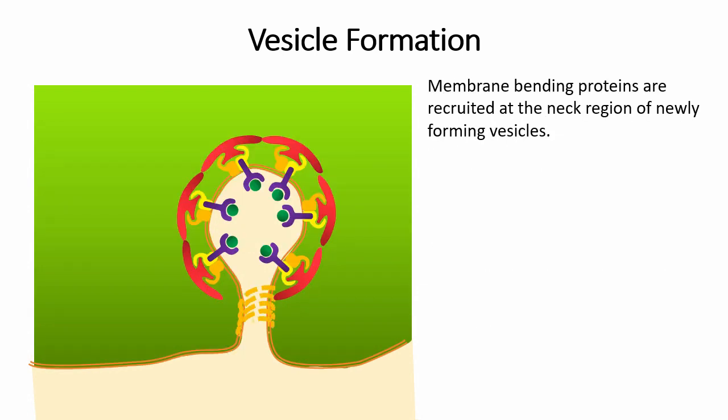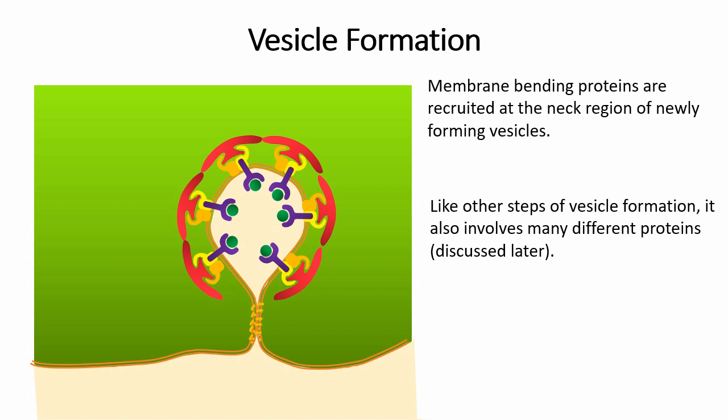Membrane bending proteins are recruited at the neck region of newly forming vesicles. Like other steps of vesicle formation, it also involves many different proteins.